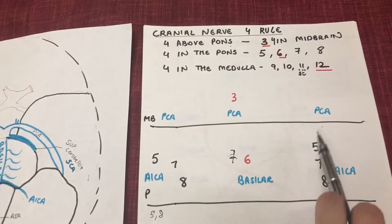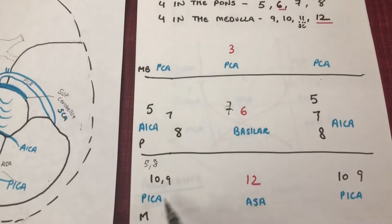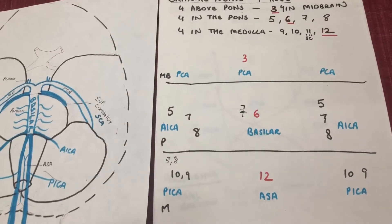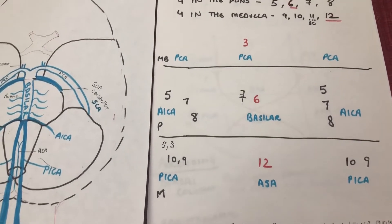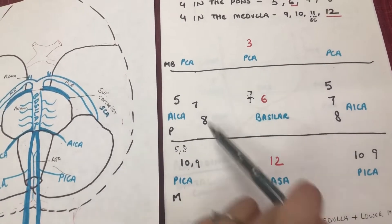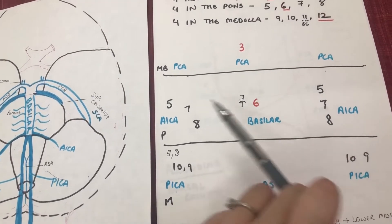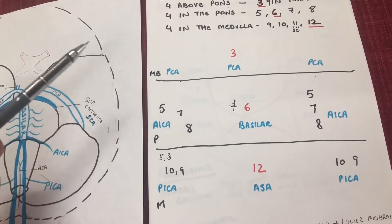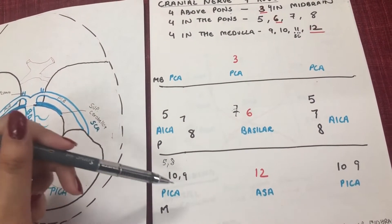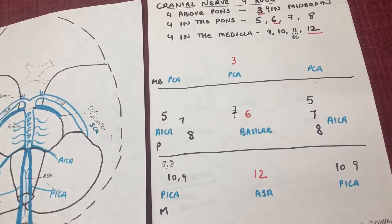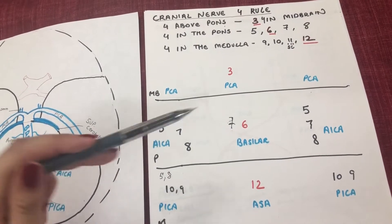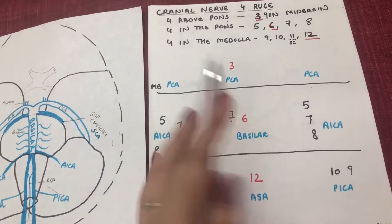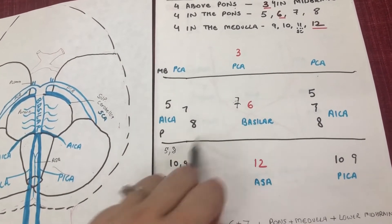Everything else — 5, 7, 8 — goes on the lateral sides of the pons, and 9, 10 on the lateral side of the medulla. Cranial nerve 6 gets lonely in the medial pons, so it attracts cranial nerve 7 to itself, making CN 7 shared between ACA and basilar. Seeing that, CN 5 and 8 go toward the PICA territory with 9 and 10. So ACA and PICA share CN 5 and 8, and ACA and basilar share CN 7.